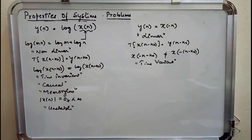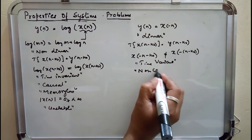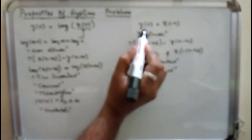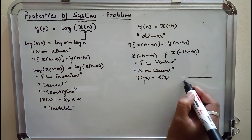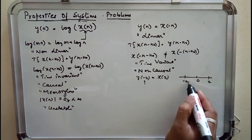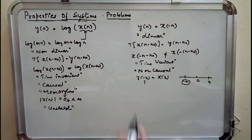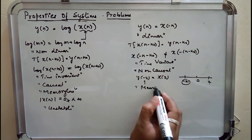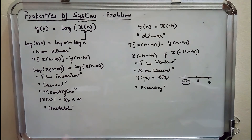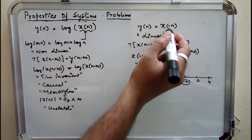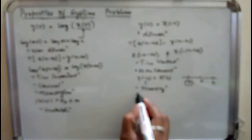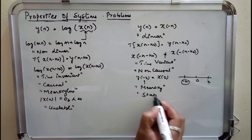For causality, if n = −2, y(−2) = x(2). The output at instant −2 depends upon input at future instant 2 (since −2 comes before 2 on the number line), so it is non-causal. Since it is non-causal, it has memory. For stability, if input is bounded, its reflection is also bounded, so y(n) is bounded and the system is stable.